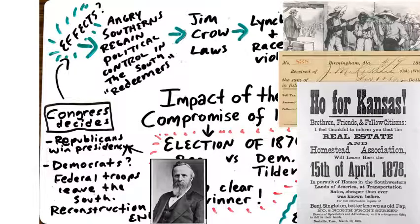A lot of African Americans in the South want to leave. As discussed in Standard One on westward expansion, there's a lot of land out west with opportunity, and it offers an escape from the violence occurring in the South. Benjamin Papp Singleton, a former slave from Nashville, organizes a group known as the Exodusters, who head out west and build communities away from the segregation and racial violence in their former communities.